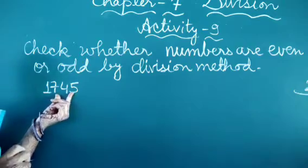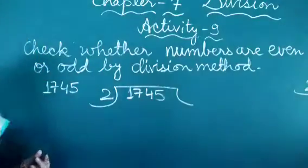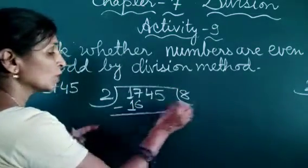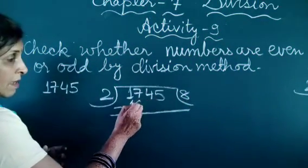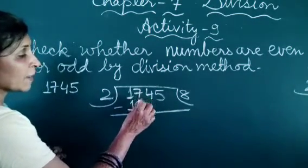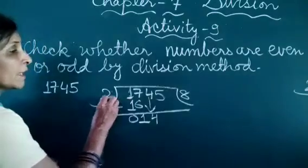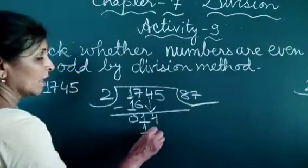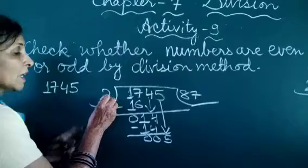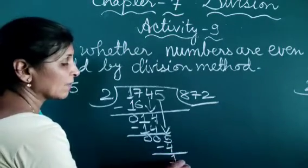Next is 1745. Now 1745 is divided by 2. 8 twos are 16, we write here, subtracted — 7 minus 6 is 1, and 1 minus 1 is 0. Bring down 4, then bring down 5. From the table of 2: 2 twos are 4, we write here, subtracted — remainder 1 comes.